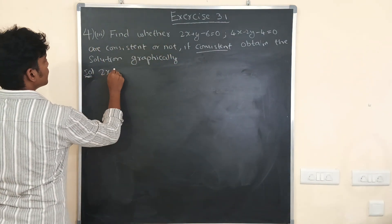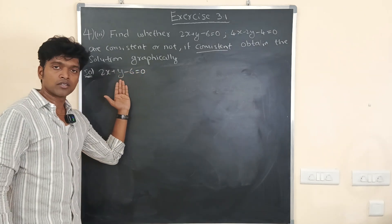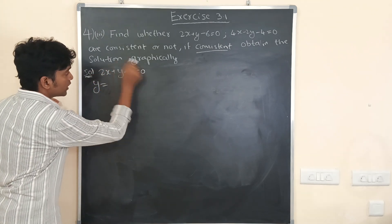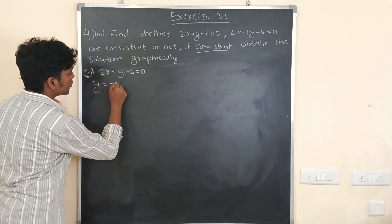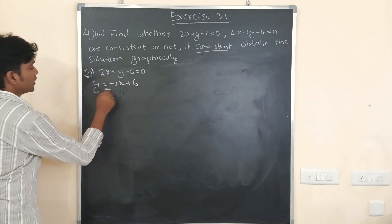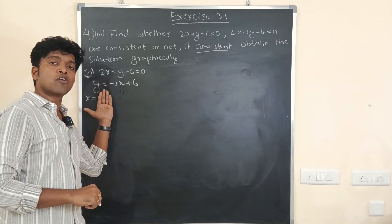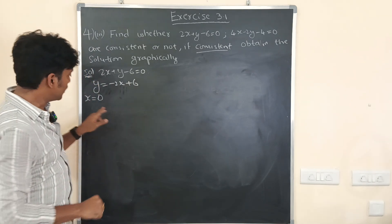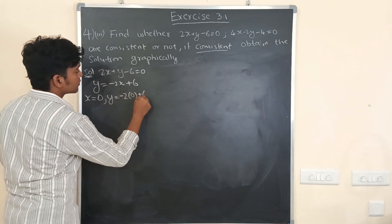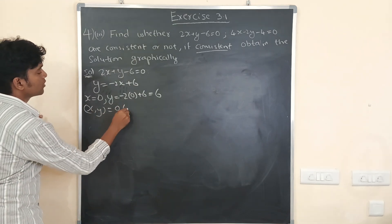The first equation is 2x + y - 6 = 0. We have to write this equation in terms of y, so y = -2x + 6. Now taking some random values of x: if x = 0, then y = -2(0) + 6 = 6. So the coordinate is (0, 6).